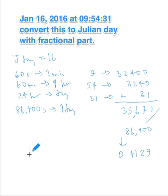Okay, so the answer here finally is that the actual day precisely is 16.4129. That's how you'd express the Julian day with decimals of this date up here.